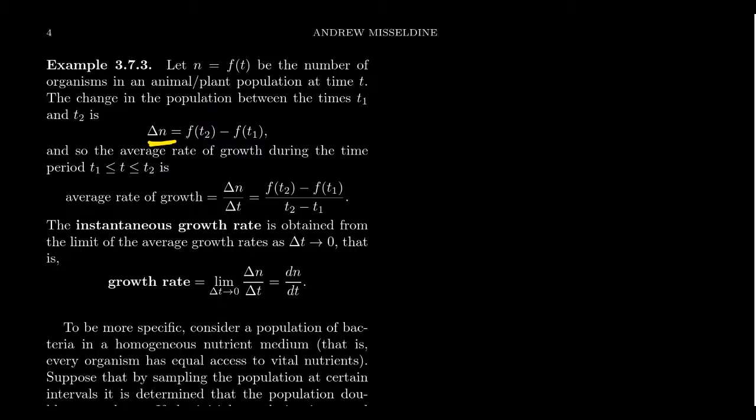And so delta N then is measuring the change of population from time T1 to time T2. So this implies that the average rate of growth during the time interval T1 to T2 would look like delta N over delta T. We would take delta N, which is the change of population from T1 to T2, divide that by the length of time. The average rate of growth would then measure how the population grew on average over that time interval.